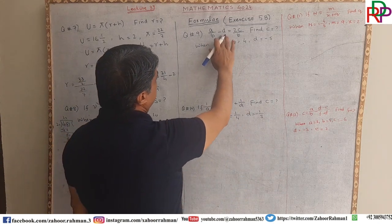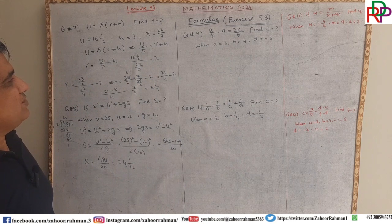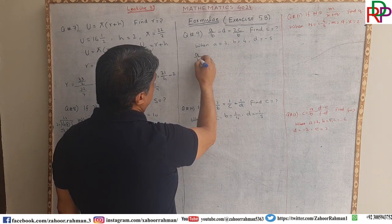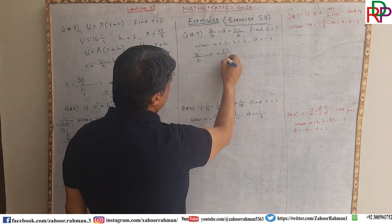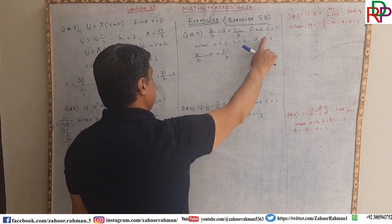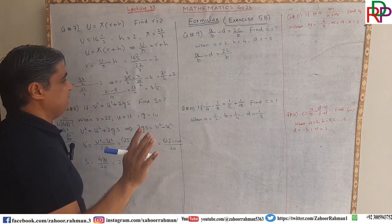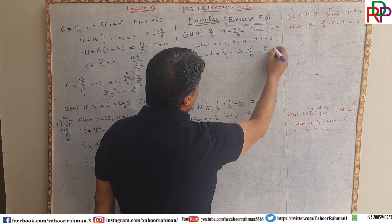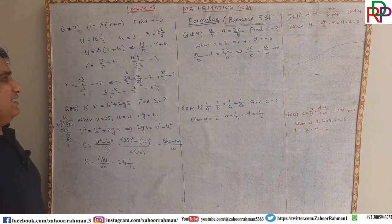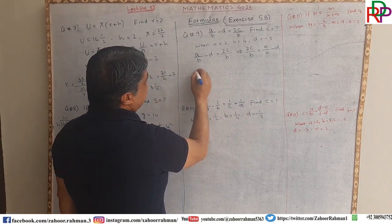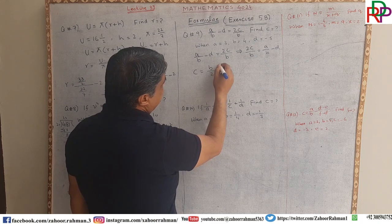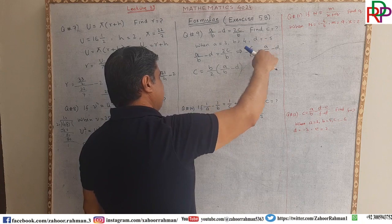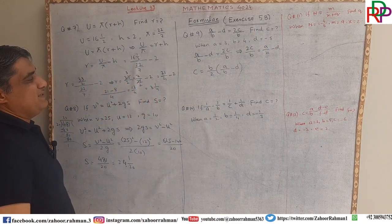The next question says: a divided by b minus d equals 2c divided by b. Find c. Writing the original equation: a over b minus d equals 2c over b. We need to make c the subject, leaving c on one side. Rearranging: 2c over b equals a over b minus d.